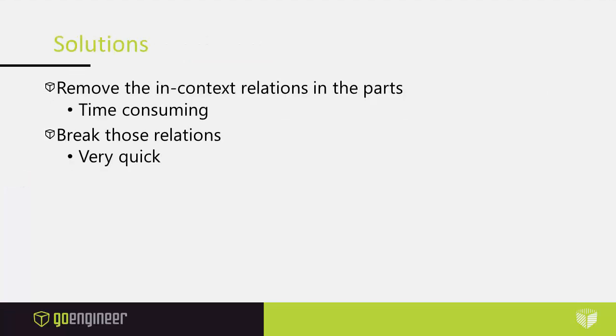So what can you do? What are your solutions? Well, there are two. You can go to each part, open up that part, and delete those in-context relations and put in other relations — perhaps at the sketch level — to replace those. The problem with that is it is time consuming because you have to open up each one and find the issue and resolve it. If you have enough time, that's probably the best way to do it — that's the cleanest way when you're done.